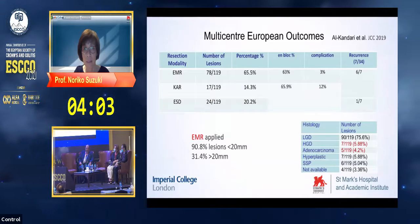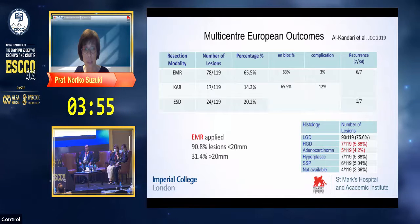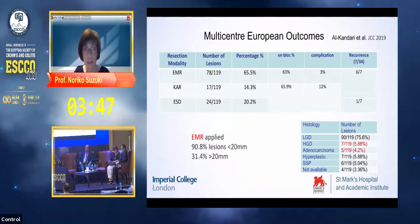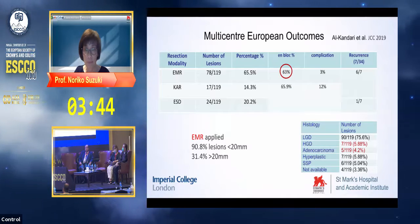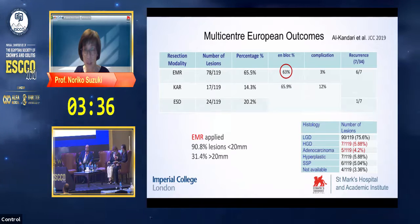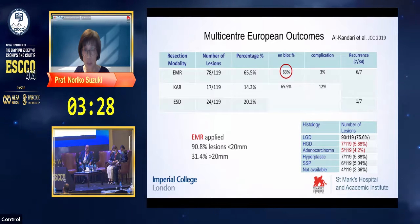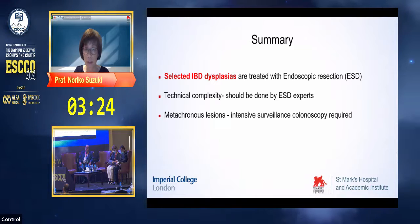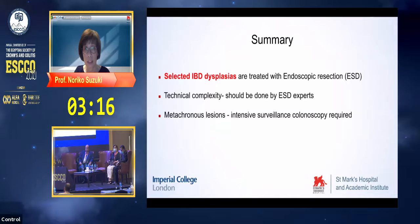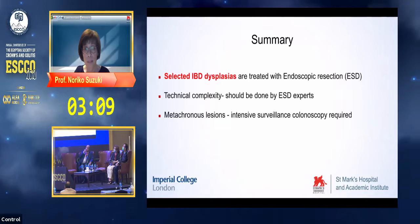Some people may ask about EMR. Studies comparing resection modalities on colitic dysplasia show that when EMR is applied for small regions, en bloc resection rates are quite low. Studies conclude EMR should be applied only for small lesions. Case selection is the key for these endoscopically treated cases. Technical complexity means ESD should be done by experts. Metachronous lesions are common, therefore intensive surveillance colonoscopy is required.